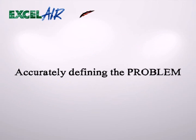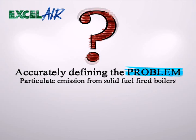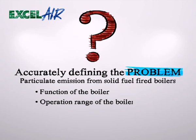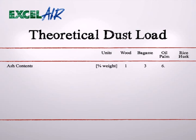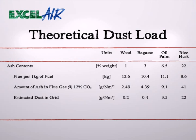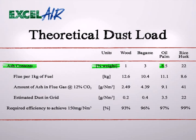To accurately define the problem, we have to know and understand the following: the function of the boiler, the operation range of the boiler, fuel consistency, and variations in flue gas conditions. The concentration of dust in the flue gas depends primarily on the ash content of the fuel. Different fuels have different ash contents, so in order to design our dust collector, we need to know what type of fuel will be used.